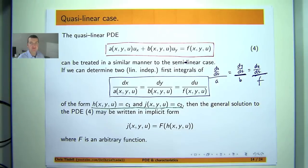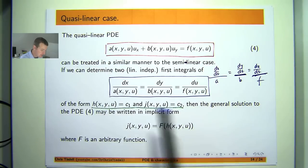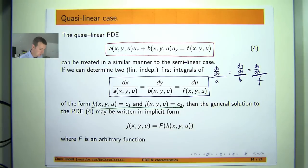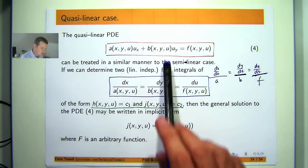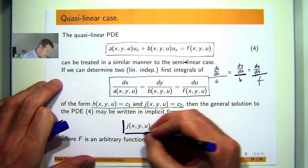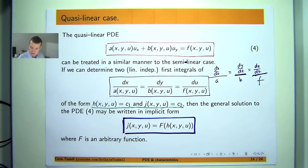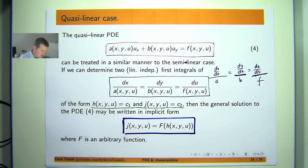These problems, for example by combining them in some way. If we can find these two possibly implicit type solutions, c1 and c2 are constants here, then the general solution to our quasi-linear PDE is the following. So here big F is an arbitrary function, a differentiable function.